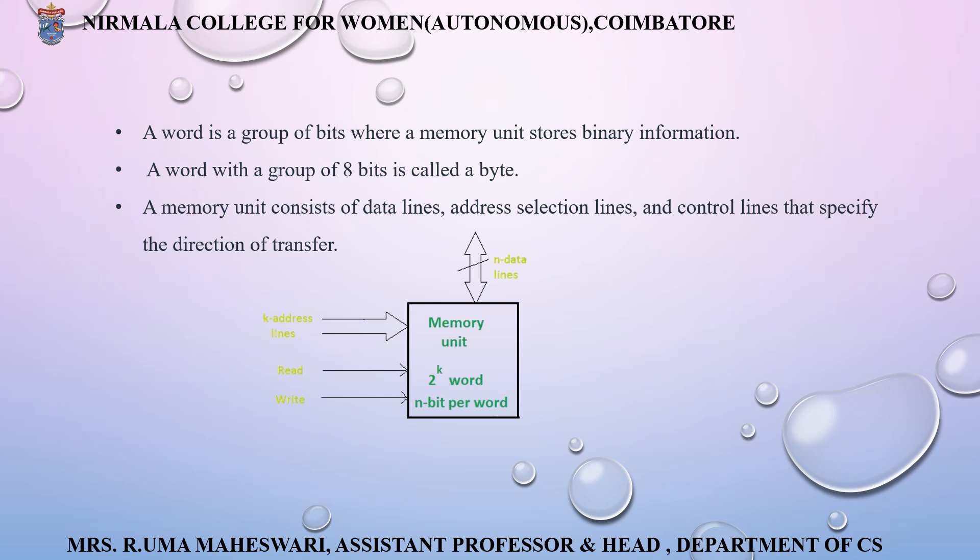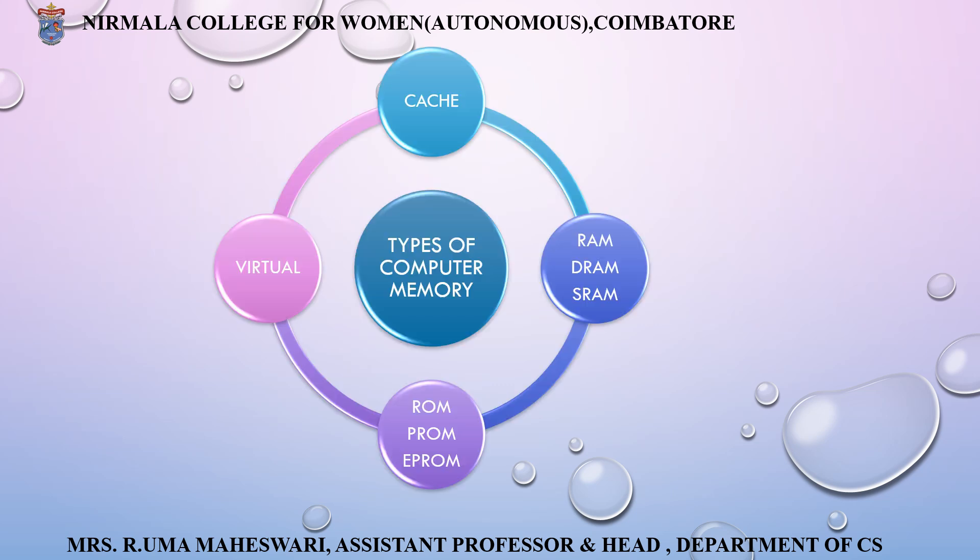A word is a group of bits where a memory bit stores binary information. A word with a group of 8 bits is called a byte. A memory unit consists of data lines, address lines, and control lines, which facilitate the direction of transfer of data from one location to another.